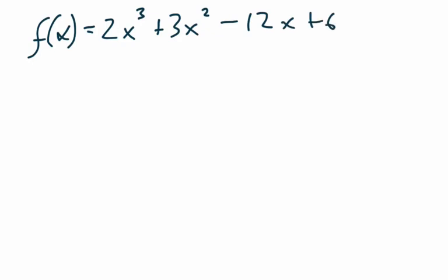This video will be another short example of the candidates test applied to a function. Here we have the function f of x equals 2x cubed plus 3x squared minus 12x plus 6, and we want to know the absolute maxes and mins on the interval negative 1 to 3.